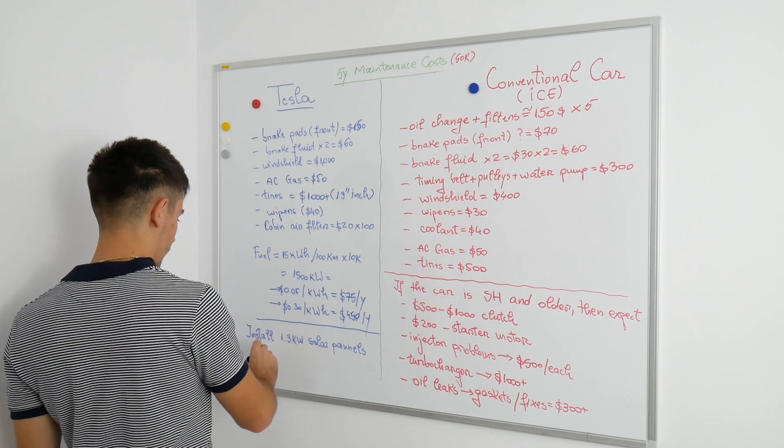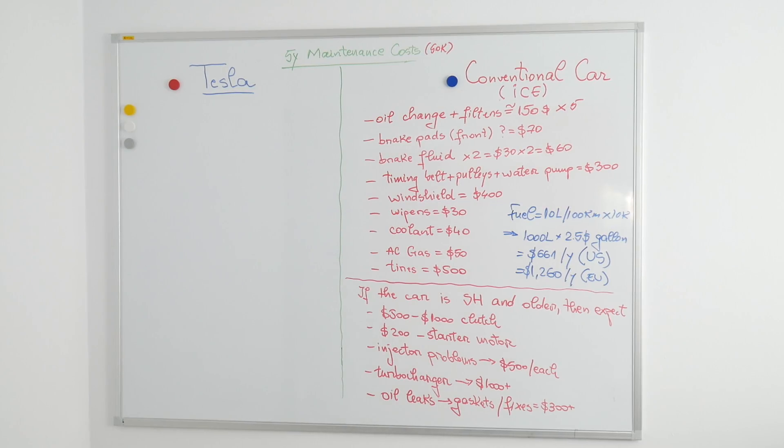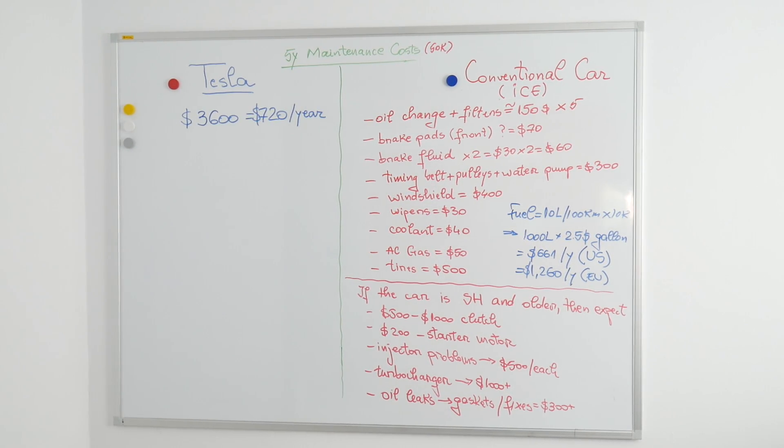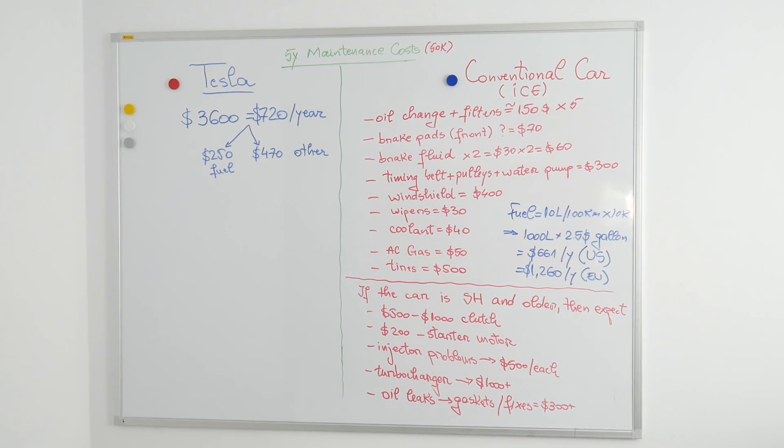So, the results are as they follow. To drive a brand new Tesla for 10,000 kilometers, you need $720 per year, of which only $250 are required for fuel or electricity.